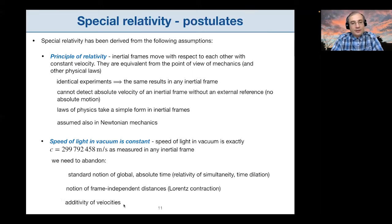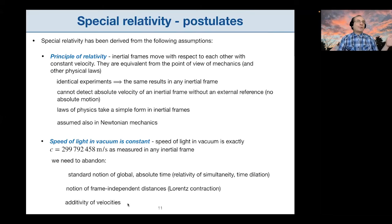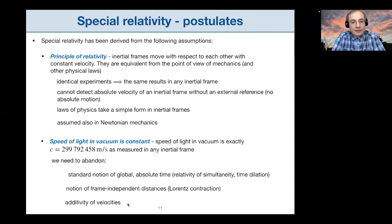Last but not least, we have to abandon the additivity of velocities. Standard everyday experience tells you that if you are moving at 10 km/h with respect to another person who is moving at 10 km/h with respect to you in the same direction, that person is moving at 20 km/h with respect to Earth. In special relativity, this does not hold anymore — there will be corrections to that.